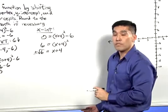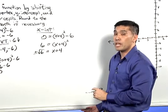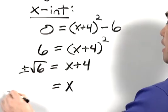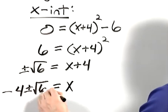And then subtracting 4 from both sides, we can finally get x by itself. So x equals negative 4 plus or minus the square root of 6.